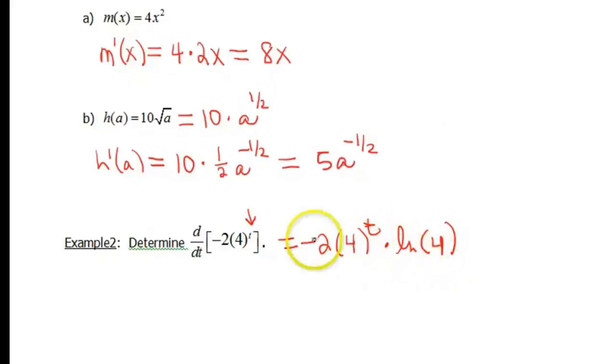Okay? Now the ln of 4 is a number. Negative 2 is obviously a number. Those are all just your coefficients. So again, if you want to simplify this a little bit further, you can. But I certainly think this answer is perfectly good enough.